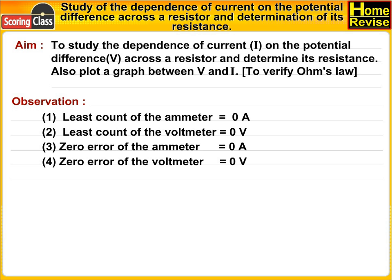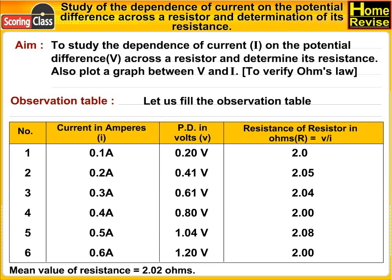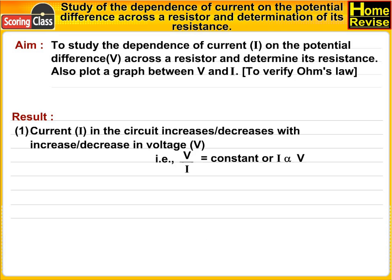Constant. Now let us see the observation table. Mean value of resistance is... Results: Current I in the circuit increases or decreases with increase or decrease in voltage V.